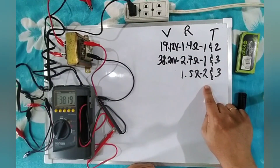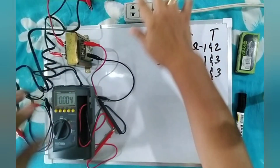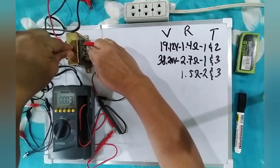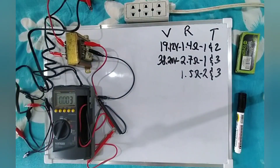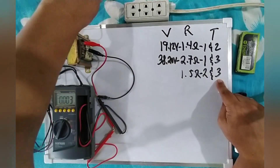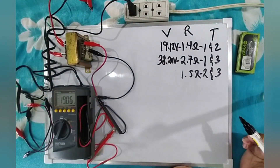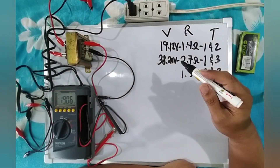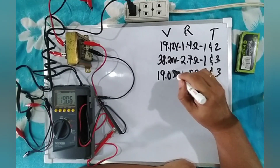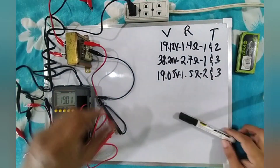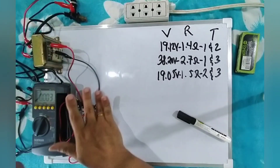Next, for the voltage measurement of terminal two and terminal three, we unplug the circuit, remove the alligator clip from terminal one and place it on terminal two, then plug it in again. The output voltage of terminal two and three is 19.05 volts. Then unplug and set aside all the circuit.